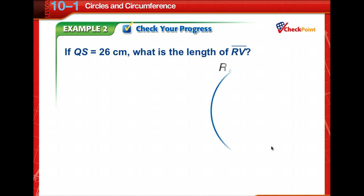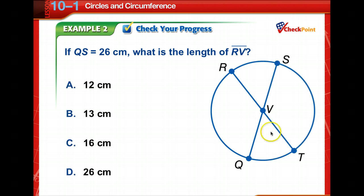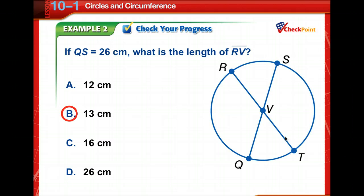Time for you to check your progress. If QS is 26 centimeters, what is the length of segment RV? Pause the video, then come back and check your answer. Since QS is a diameter, we know 26 equals 2RV. Divide both sides by two and we get 13 centimeters.